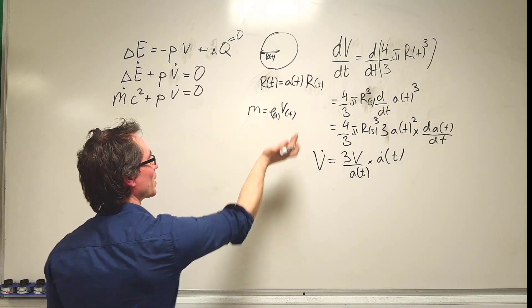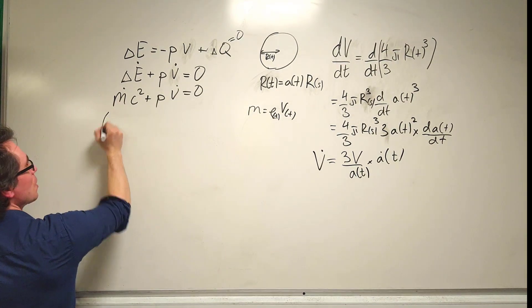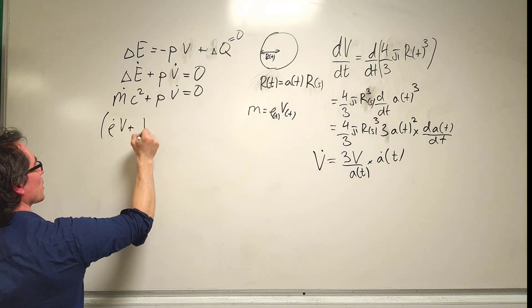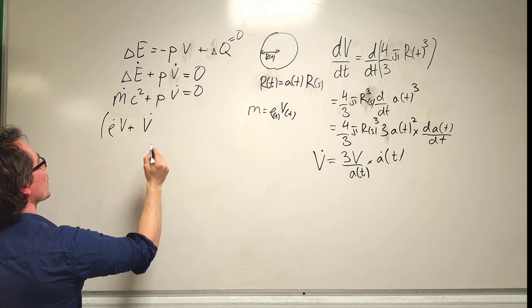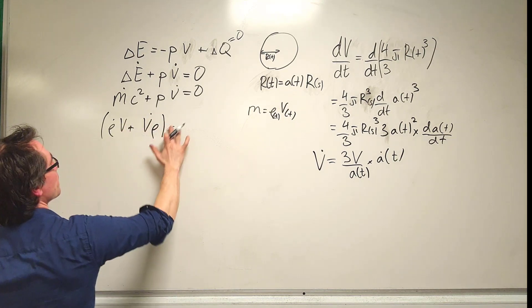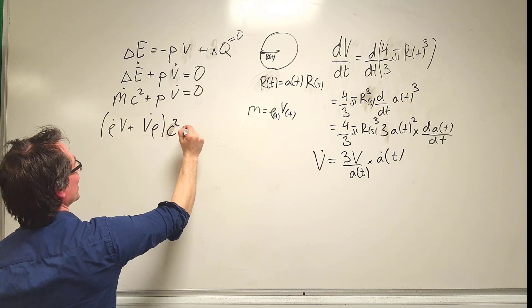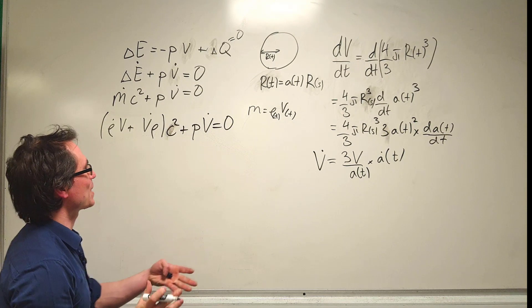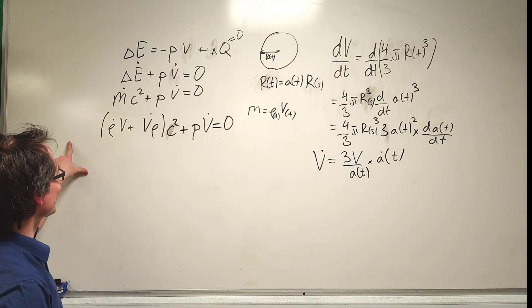Applying the product rule, m dot equals rho times V, so we get rho dot times V plus V dot times rho, and multiply by c squared, plus p V dot equals zero. We're definitely getting there.